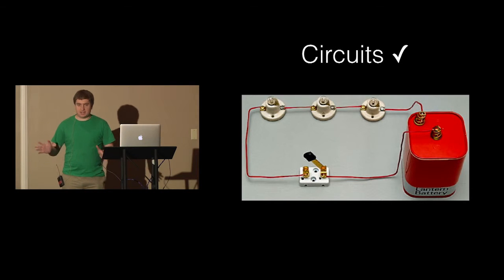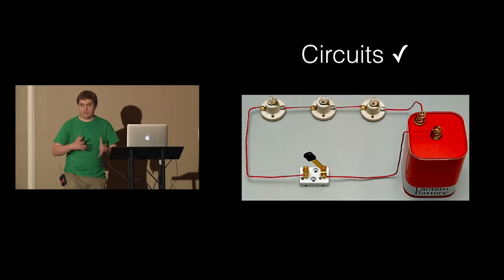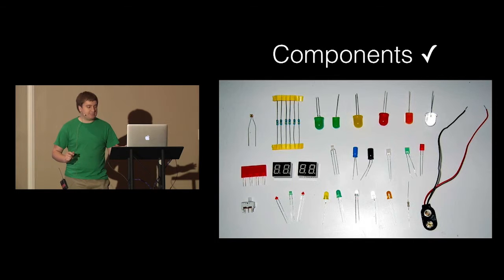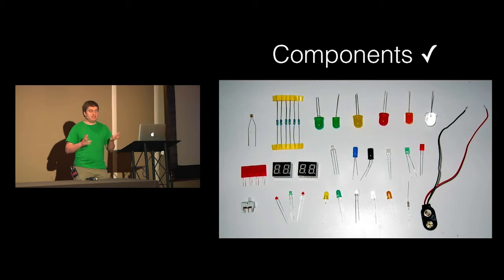So you've got a good understanding of circuits now. The power wants to go from high voltage to low voltage, and on the way you can put these little obstacles to turn on lights and do cool things. And you've probably seen these before, different LEDs and resistors and diodes.